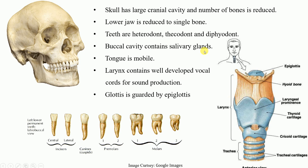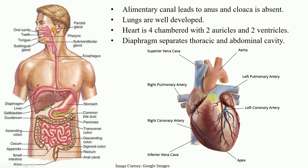The buccal cavity contains large salivary glands responsible for secreting saliva, and the tongue is mobile among all mammals. The larynx contains well-developed vocal cords, very important for sound production. The larynx is made up of different kinds of cartilage forming the sound box; when air passes through the vocal cords, sound is produced — a characteristic feature of mammals. In the larynx, the glottis is guarded by the epiglottis, as you can see in the diagram.